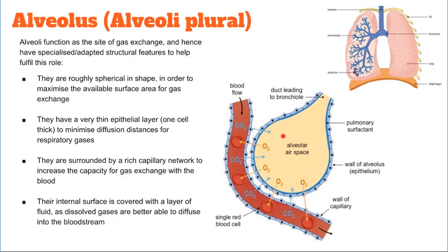Specific cells in the alveolar walls secrete a fluid that keeps the inner surface of the alveoli moist, which allows gases to dissolve. That fluid contains what's called a natural detergent, or surfactant, which also prevents the sides of the alveoli from sticking together, creating a moist layer. Overall, this increases the surface area across all the alveoli, and this is where gas exchange happens.